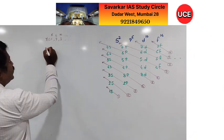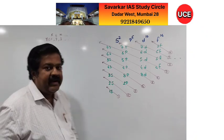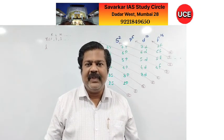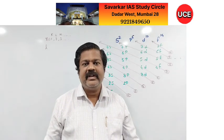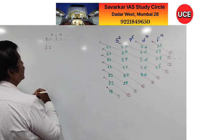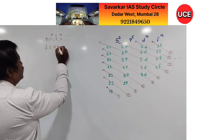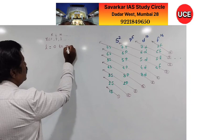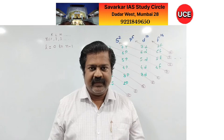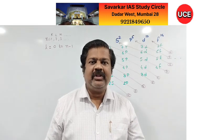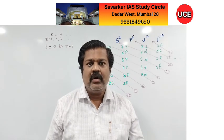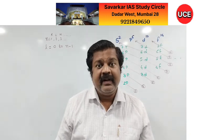The second quantum number is denoted by small l and is called the azimuthal quantum number. The azimuthal quantum number has values from 0 to n−1. Many times it is mentioned as only n−1, but it ranges from 0 to n−1.